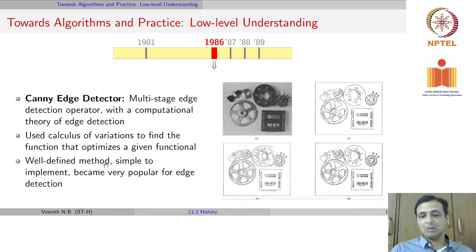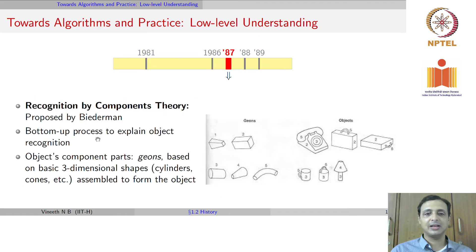In 1986 came the Canny edge detector, which was a significant development for edge detection. John Canny proposed a multi-stage edge detection operator, also known as a computational theory of edge detection. It used calculus of variations to find the function that optimizes a given functional. It was a very well-defined principled method, simple to implement, and became very popular for edge detection. It was extensively used for many years, probably until this day in certain industries.